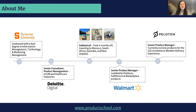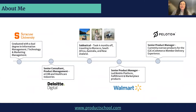As much as I enjoyed consulting, I wanted a bit more ownership over the decision making happening towards the products I was building, so I pursued a transition to product management. Before doing so, I took a brief sabbatical — I got to travel the world and meet incredible new people. When I returned, I was more confident than ever that I wanted to work in product. Before coming to Peloton, I spent a few years working at Walmart Labs, where I got to work on their mobile platform, fulfillment, and marketplace products.